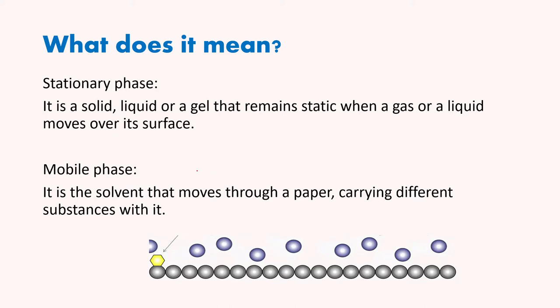We will learn some terms: stationary phase and mobile phase. Stationary phase is a solid, liquid, or gel that remains static. Static means that it does not show any motion or does not move. It remains static when a gas or liquid moves over its surface.